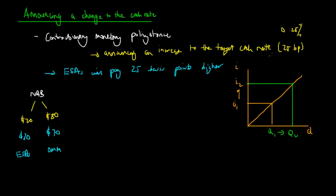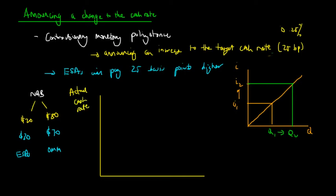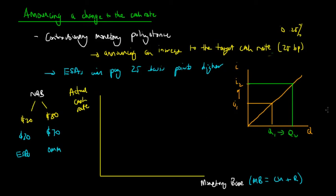We're going to look at how this would change prevailing levels of the cash rate using supply and demand analysis. The Y-axis represents the actual cash rate — how much interest is being paid on securities traded over the overnight money market. The X-axis represents the monetary base, which is what the RBA controls through open market operations. The monetary base is defined as currency (CU) plus reserves (R).